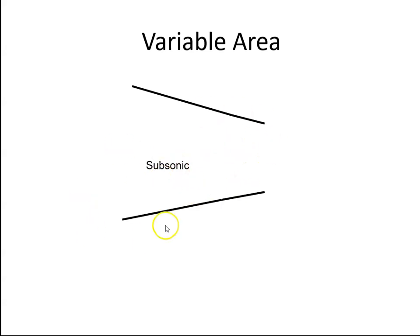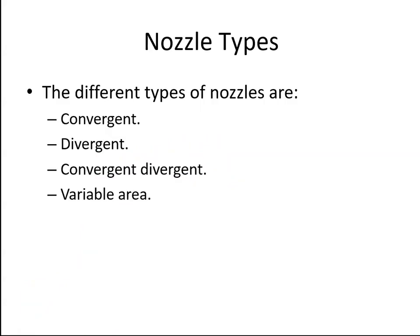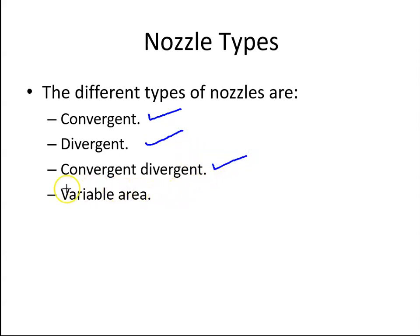This can all be controlled by the FADEC. So those are our different nozzle types: convergent, which is used on all commercial aircraft; divergent, which may be seen on helicopters; convergent-divergent for supersonic aircraft; and variable area for supersonic aircraft that also spend time in the subsonic region.